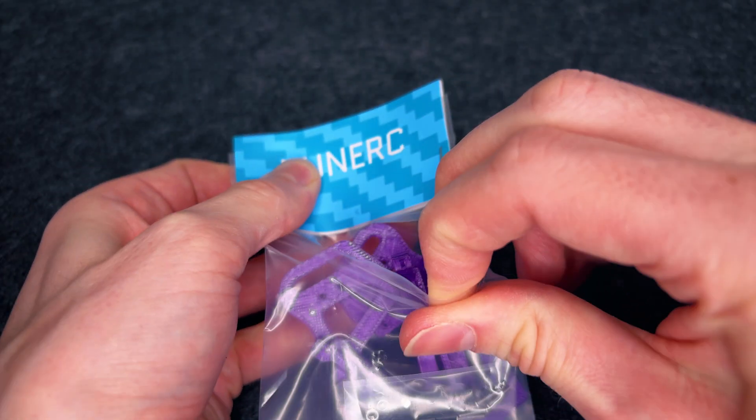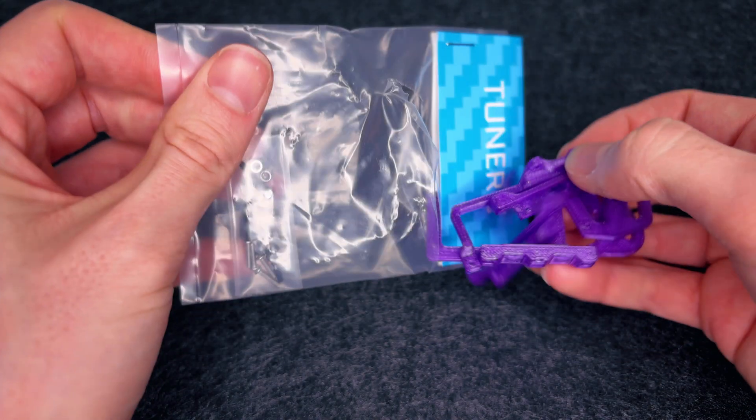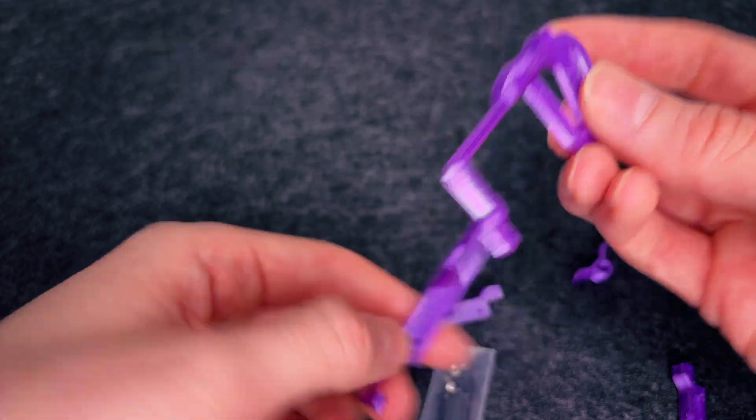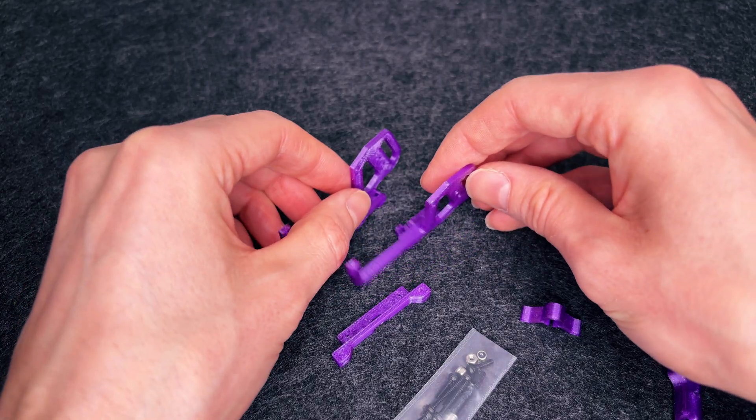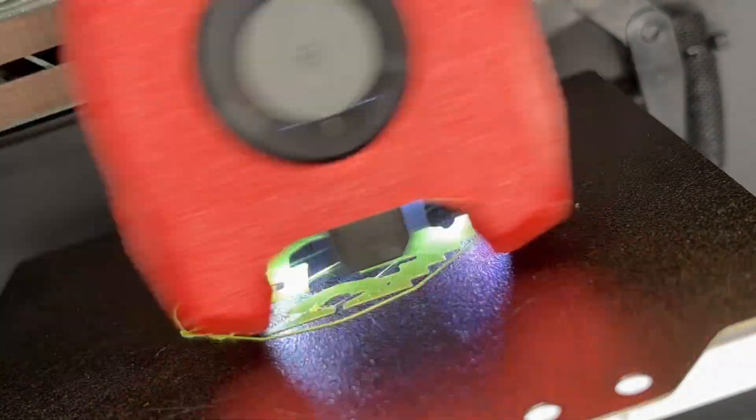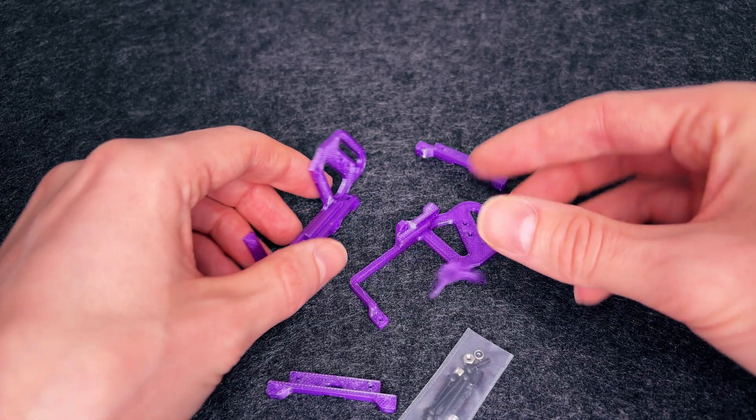Now, here's the catch. This kit was actually designed for a DJI O3 build. Since we're using the newer O4 Lite, some parts won't fit. So, we'll have to swap out a few components, and print new ones for the O4.